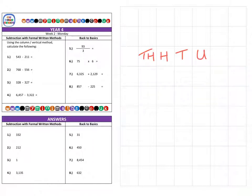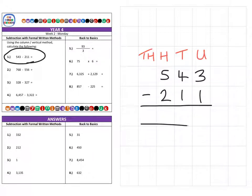Let's have a look at the first question here. We have 543 subtract 211. I'll also write that as 543 subtract 200, a single ten, and the one to make that 11.